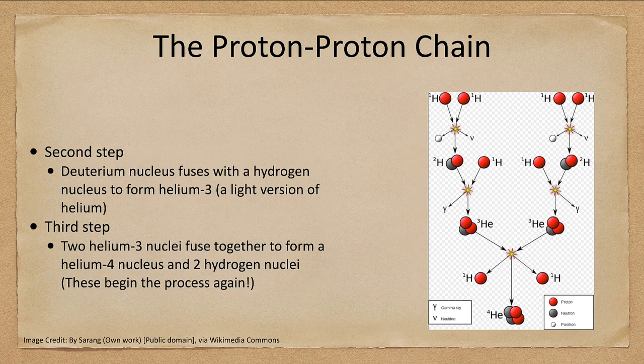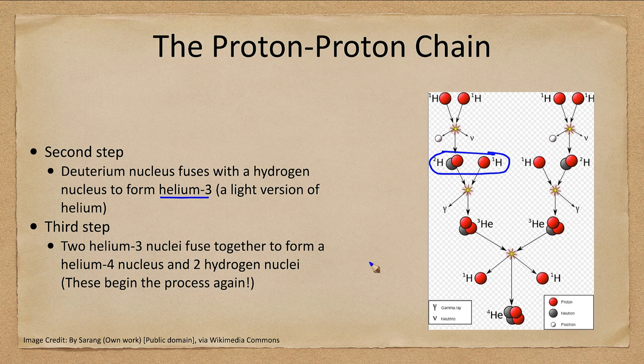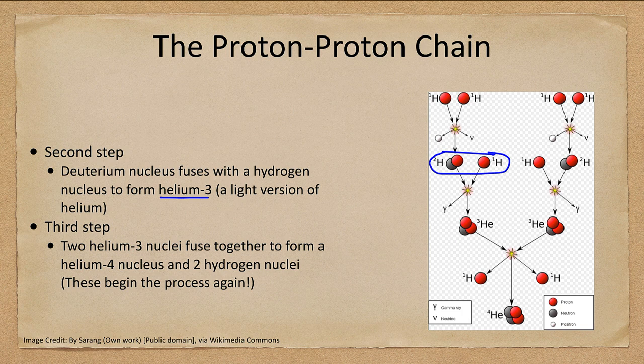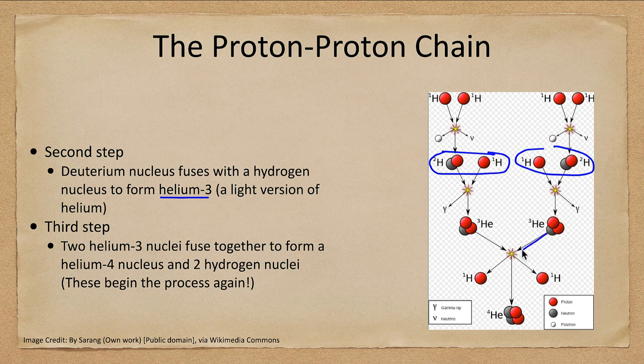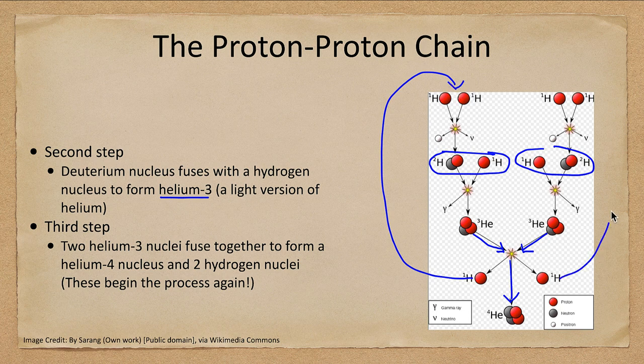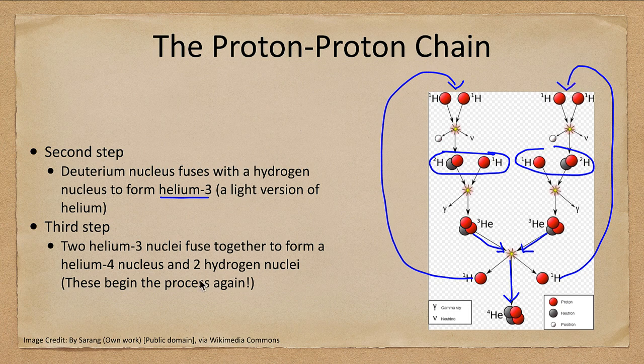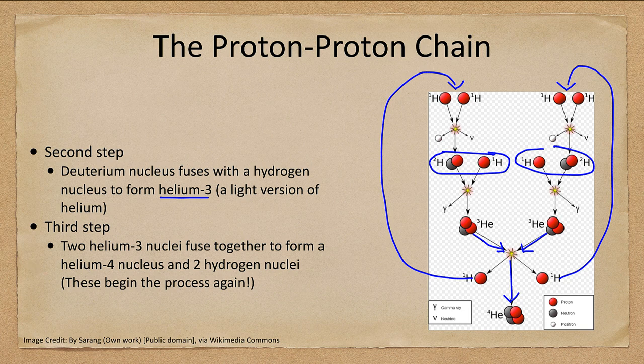The next step, we take that deuterium and it fuses with another regular hydrogen atom. That gives off helium-3. Helium-3 is a lighter version of helium. Normal helium that we fill up balloons with is helium-4. We do that twice and we've now formed two helium-3 nuclei. They combine together to fuse and make a helium-4 nucleus, sending two protons back off at high energy to continue this process. This goes on and on continuously within the sun. Each of these gives off a little bit of energy, not a lot but a little bit, and that adds up over all of the reactions that occur.